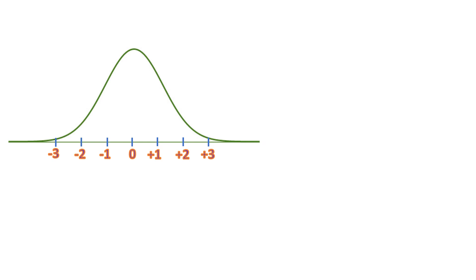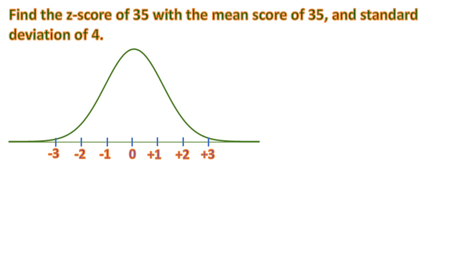Another example. So we have this: find a z-score of 35 with a mean score, it's the same 35, and standard deviation will be the same also, it's 4.